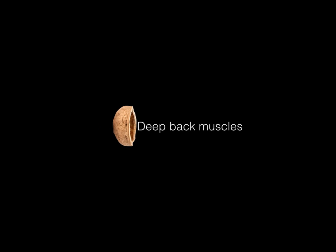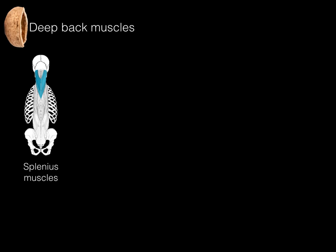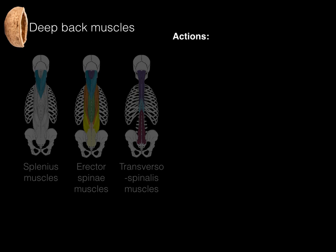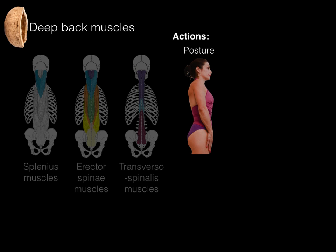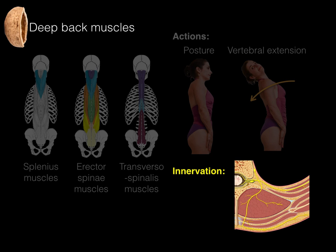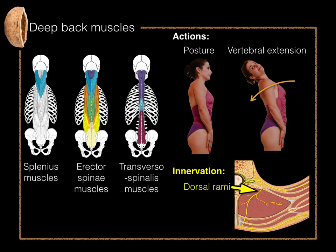Deep back muscles in a nutshell: we have the splenius muscles, the erector spinae muscles, and the transversospinalis muscles. The actions of these deep back muscles are posture — keeping the vertebral column erect — and extension of the vertebral column. The nerves responsible for innervating these muscles are the dorsal rami, with segmental innervation at every level. Those are the deep back muscles in a nutshell.